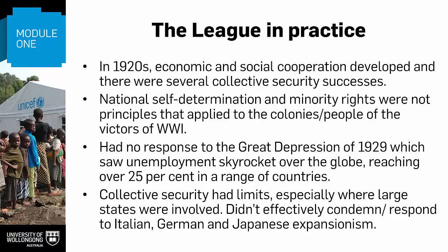Second, national self-determination and minority rights, which were the principles of the League, were not principles that applied to the colonies or peoples of the victors of World War I. So there wasn't an equal footing in the League. Third, the League had no response to the Great Depression of 1929, which saw unemployment skyrocket over the globe, reaching over 25% in a range of countries. Fourth, despite those successes in collective security, for the most part that didn't function well. For example, when the Poles seized Vilnius from Lithuania in 1920. Further, it became clear that the League lacked power when it came to disputes involving large states. Extremism rose with declining economic conditions in the 1930s caused by the Great Depression, and the League couldn't deal with the aggression of major states. They didn't effectively condemn Italian and German expansionism.